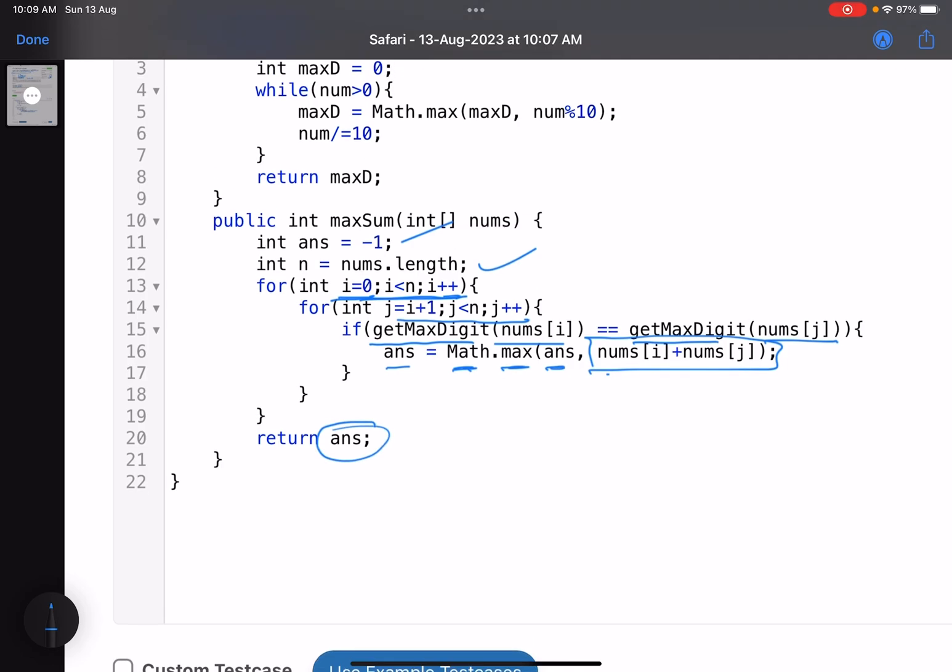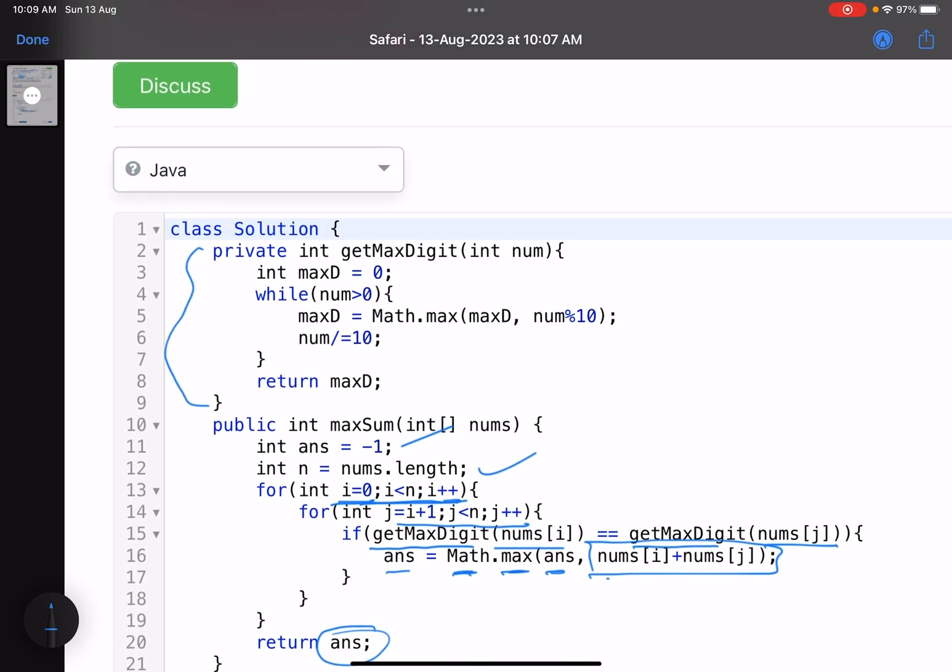And return the answer. Now comes the question: what this utility function is doing, rather how it is doing. So this max digit initially is zero.